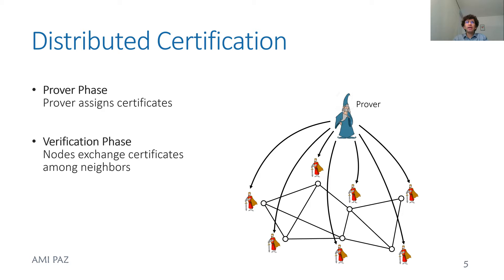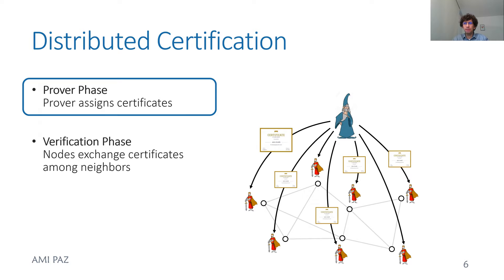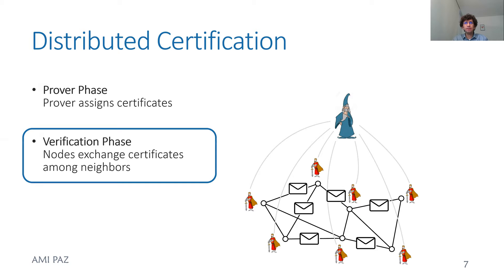This work talks about how to extend these mechanisms to use quantum bits. We think of a mechanism with two ingredients: a prover above that sees all the network and wants to help the units verify the state, and the verifiers — the units themselves — that have to verify that the replicated data is consistent. There are also two phases. In the first phase, the prover assigns certificates to the units. In the second phase, the units exchange certificates with their immediate neighbors and then decide if the state of the system is okay.